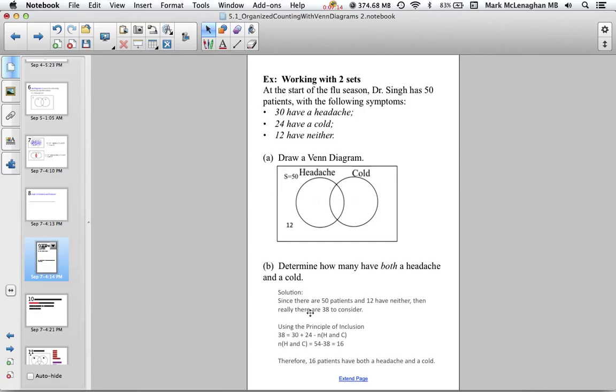Determine how many have both a headache and a cold. We can use our principle of inclusion. There are 50 patients, 12 have neither, so really we're talking about 38 patients. Using our principle of inclusion, 38 equals 30, which is the number of people with headaches, plus 24 people who have a cold, and then we subtract the intersection, which we really want to find out—how many have both the headache and a cold.